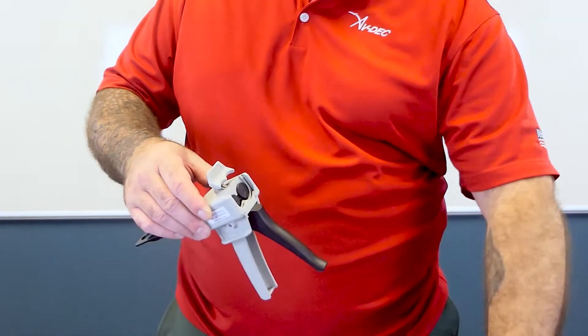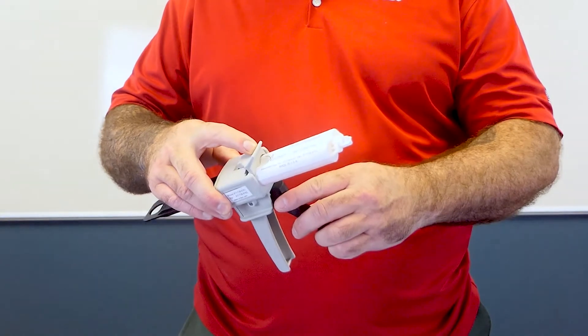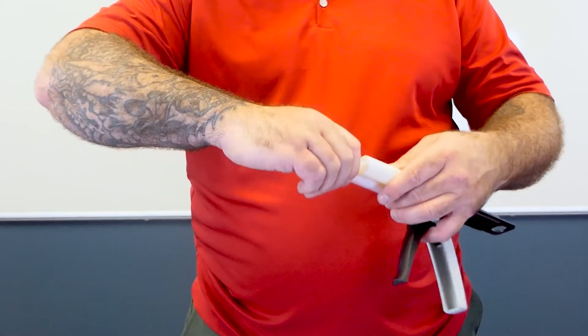Place rectangular flange of dual cartridge into grooves on top of dispenser and slide cartridge into place. Lower cartridge retainer over flange of cartridge until it locks in place.